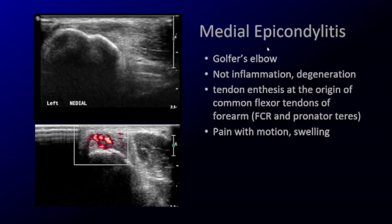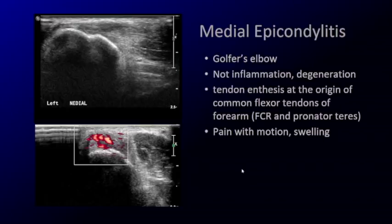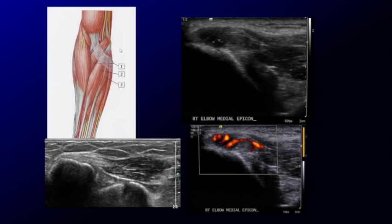Medial epicondylitis is a misnomer — it's not an inflammation, it is a degeneration, so we're looking at tendinosis just like we saw on the shoulder. It's a thickening, decreased in echogenicity, and you may see increased vascularity — which is not inflammatory, but rather an angiofibroblastic response or healing process. Patients will say they hurt when you scan them there. Here's normal and here's abnormal: hyperechoic becomes hypoechoic, thickened, nodular, with increased vascularity. This is common flexor tendinosis, also known as medial epicondylitis or golfer's elbow — which doesn't always occur in golfers.